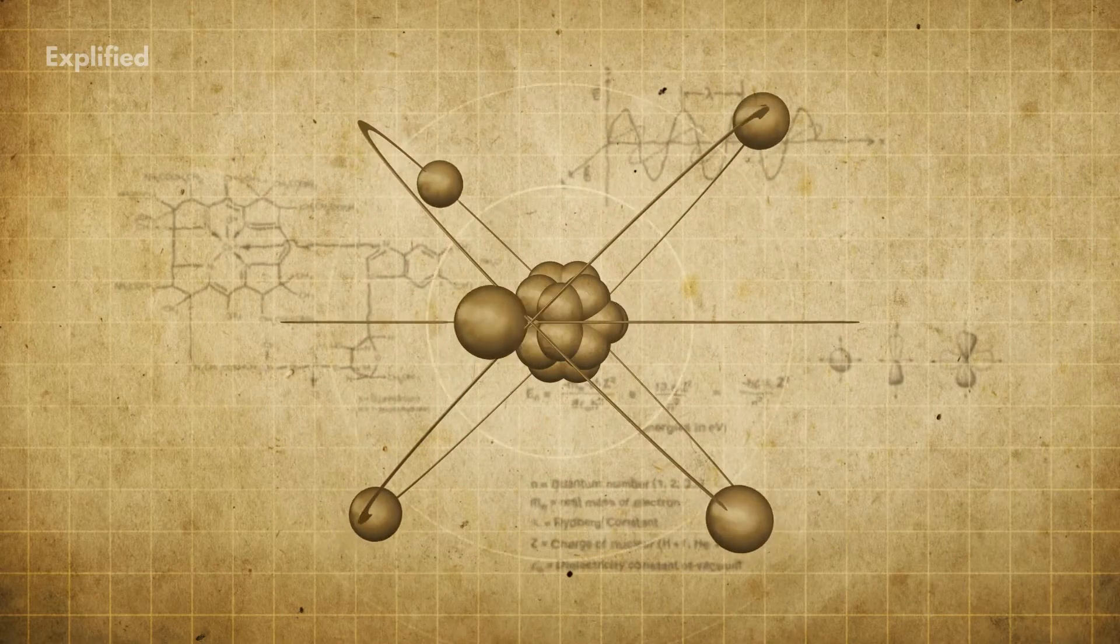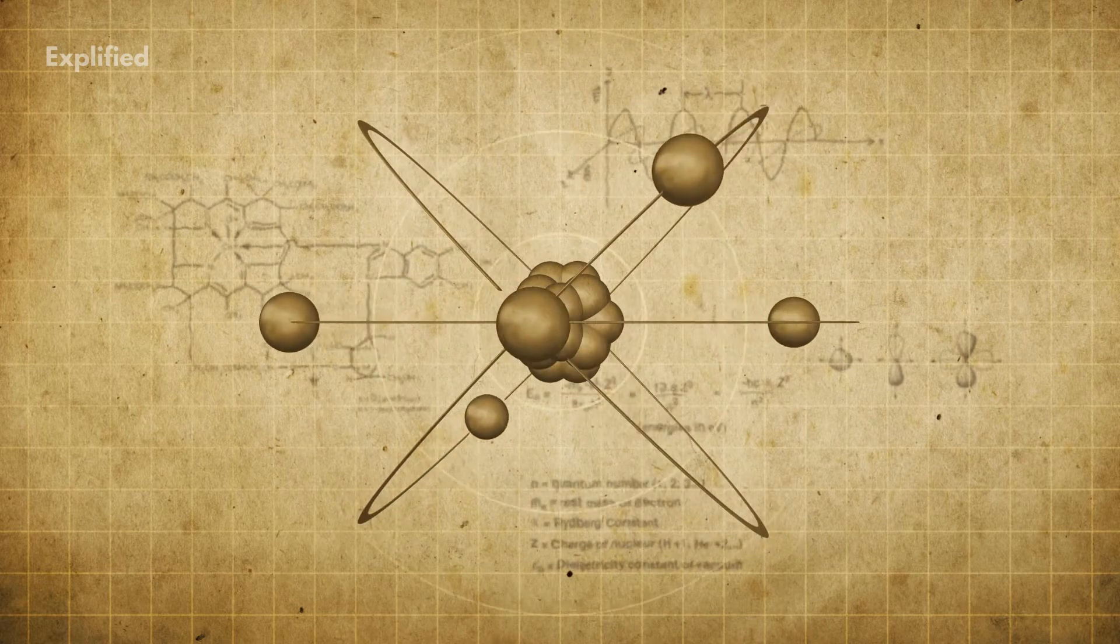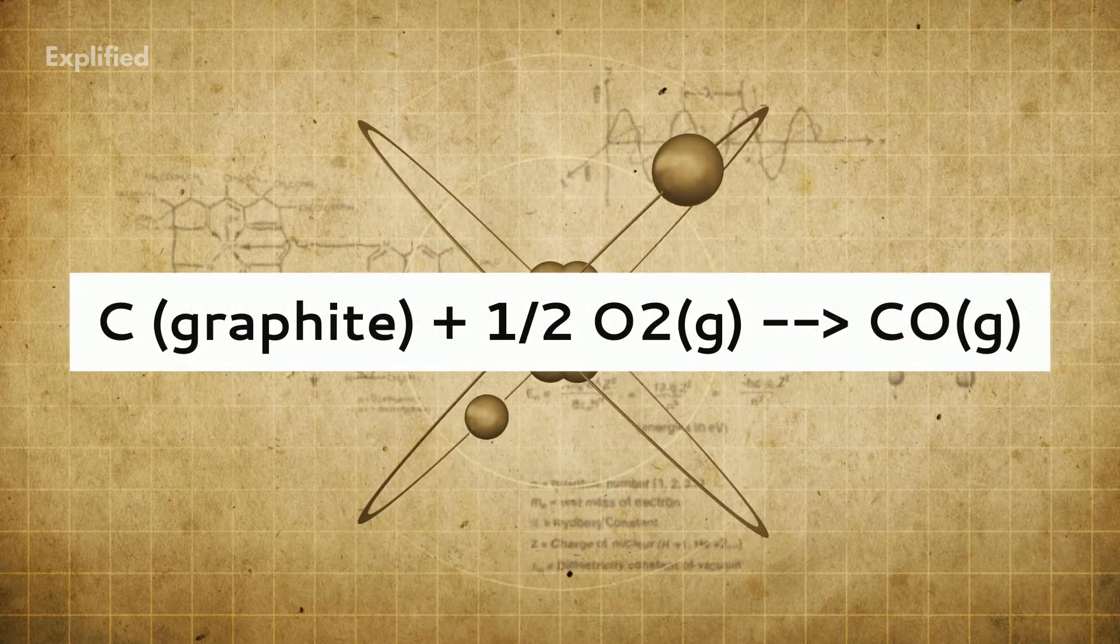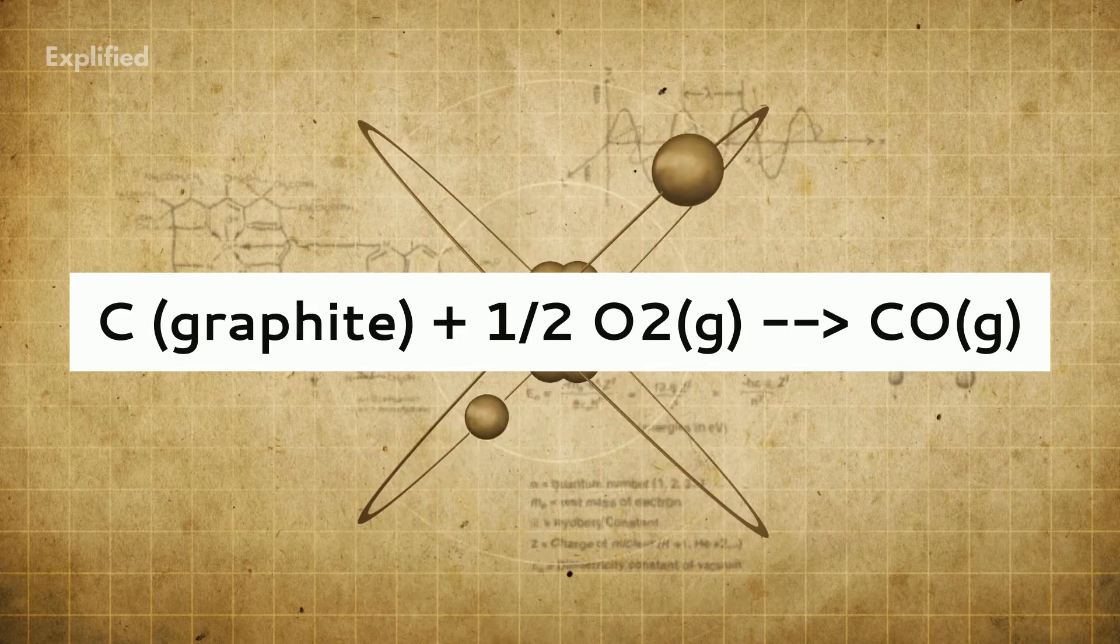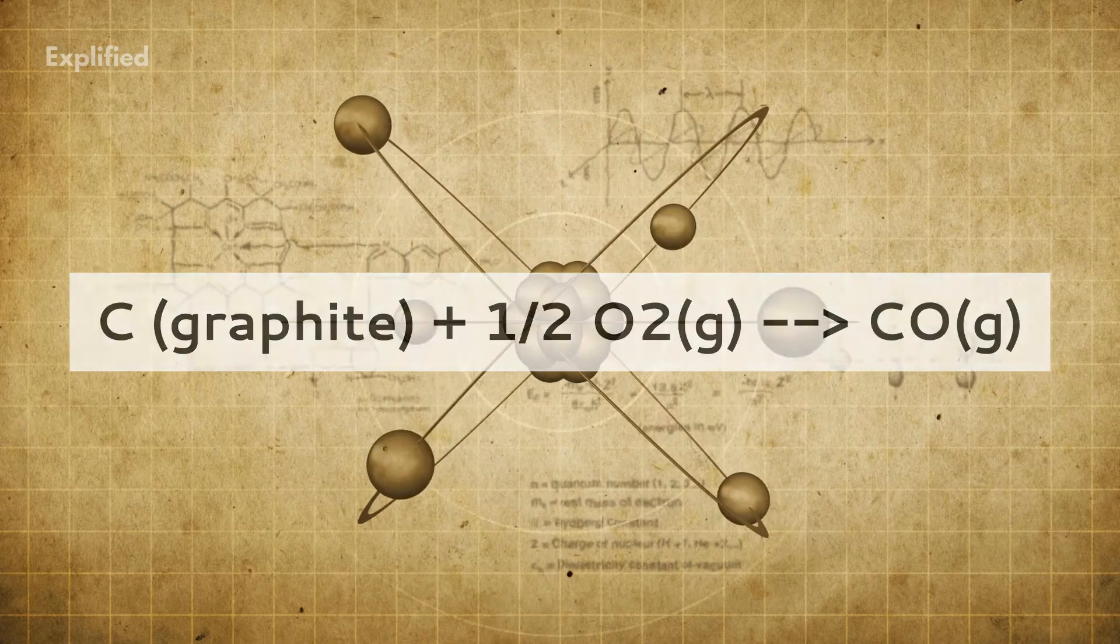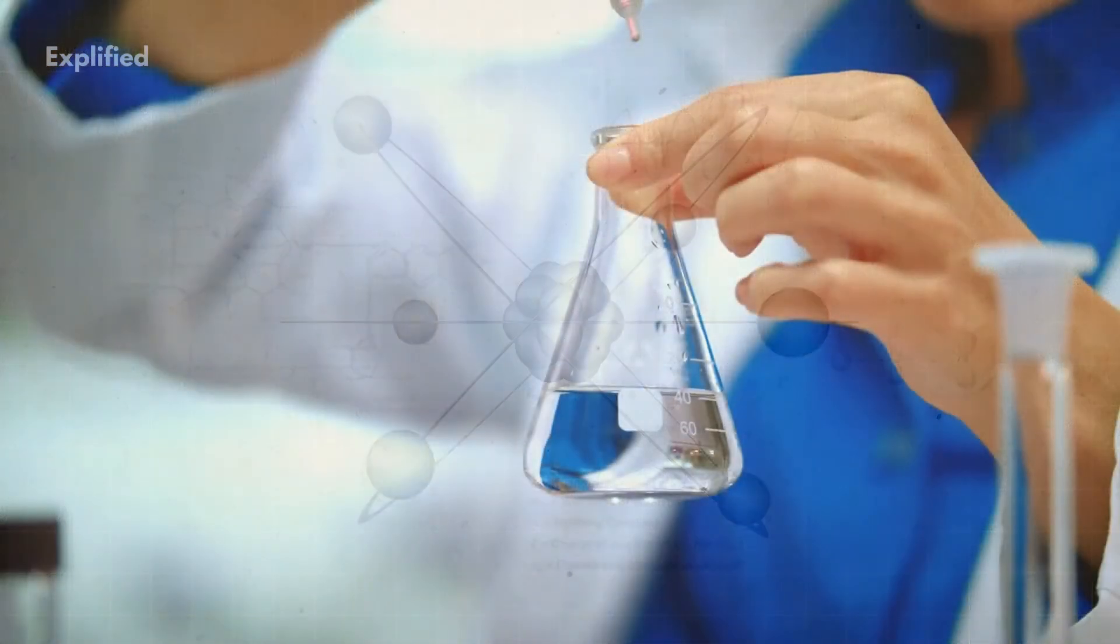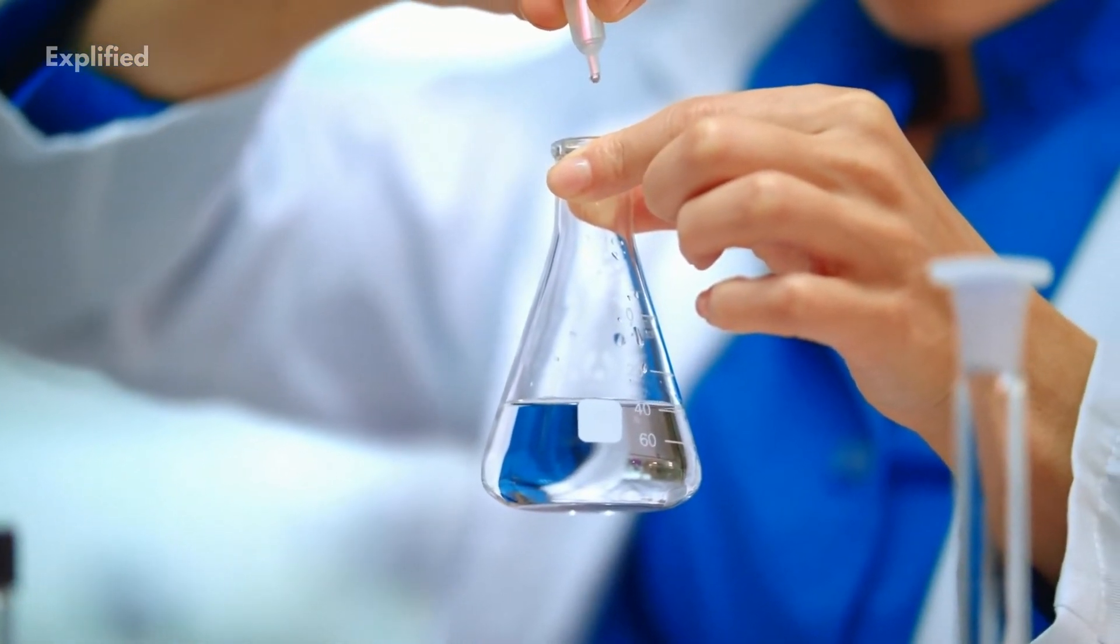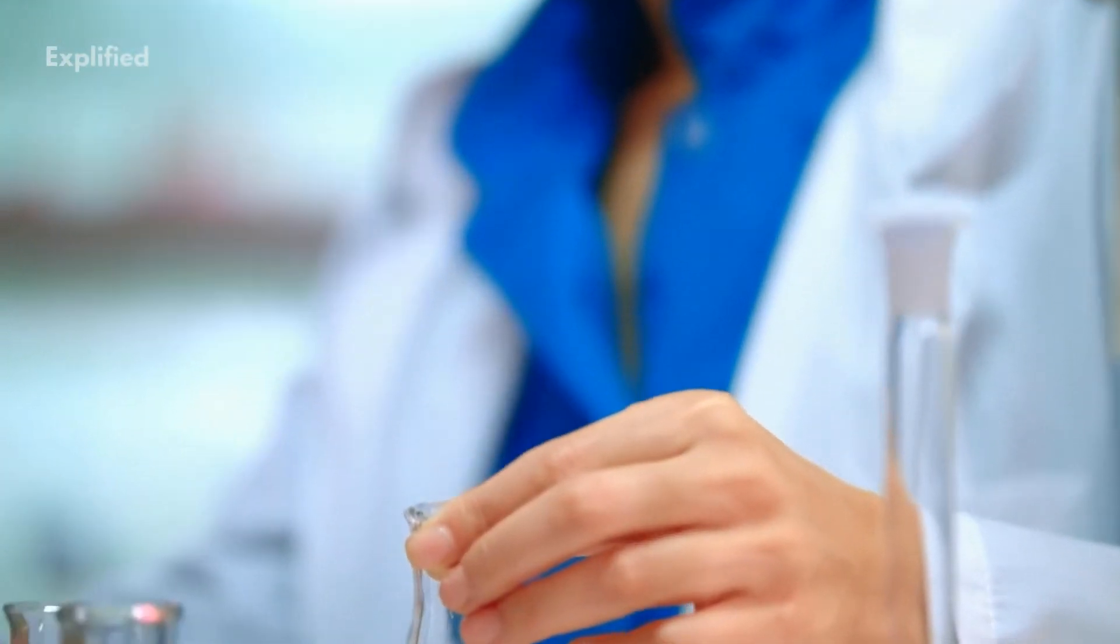However, there are some reactions for which the direct measurement of enthalpy in the laboratory is not possible. For example, the standard enthalpy change of the reaction, carbon plus half O2 gives CO, cannot be determined with the help of a calorimeter because the combustion of carbon is incomplete unless an excess of oxygen is used. If the excess of oxygen is used, some of the carbon monoxide is oxidized to CO2. How can we then determine the enthalpy change with such reactions when direct measurement is not possible?